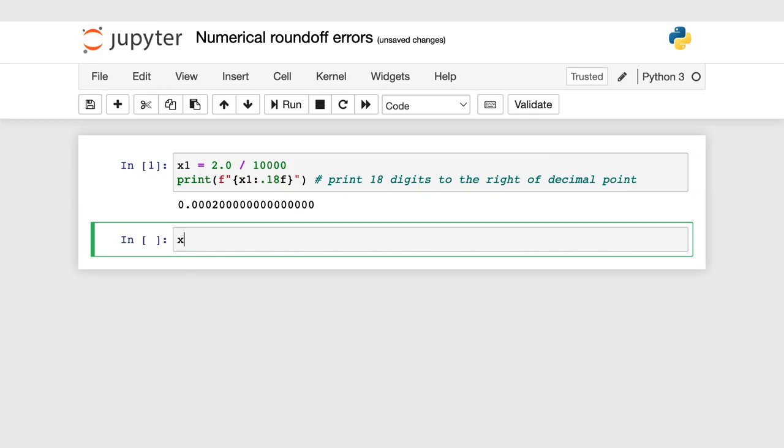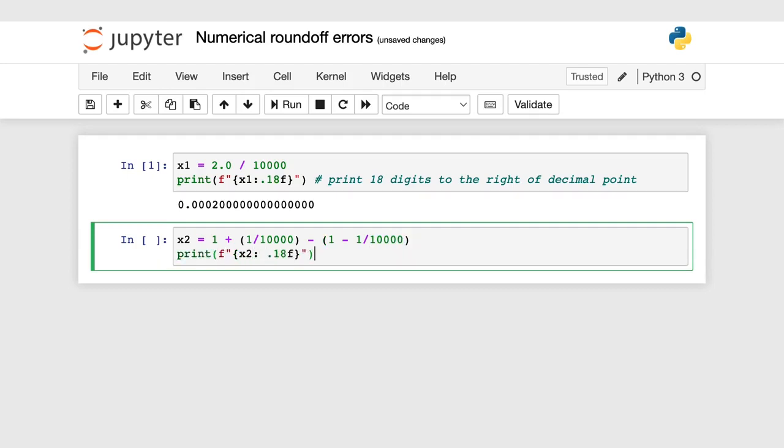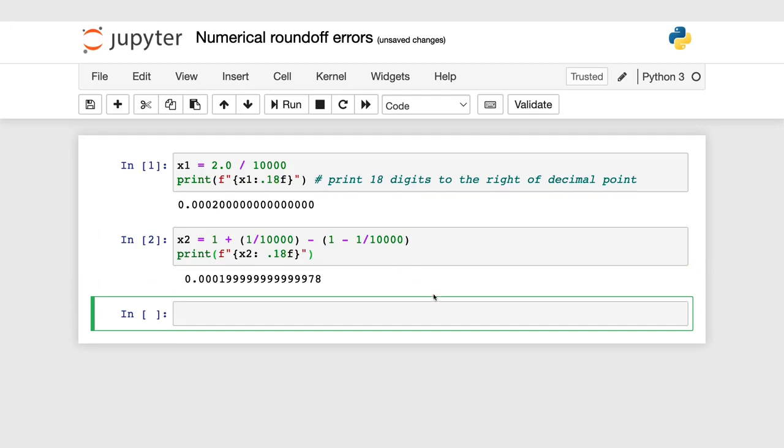Second, let me set x equals, I'm going to insist on computing 1 over 1 plus 10,000 and then subtract from that 1 minus 1 over 10,000, and let's print that out. Oh, okay, this looks a little bit off, as if there's some round-off error.